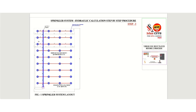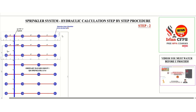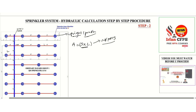Now we shall discuss Step 2. In Step 2, we need to determine the area of an individual sprinkler — we will represent area by A. We are considering an upright sprinkler. The area coverage of one individual sprinkler is S by L; this is the formula given in NFPA 13.